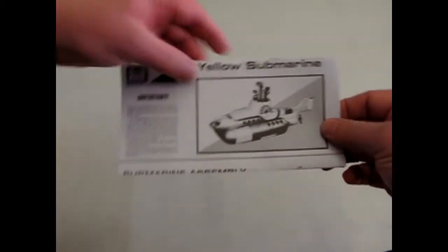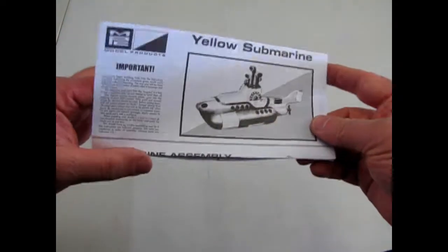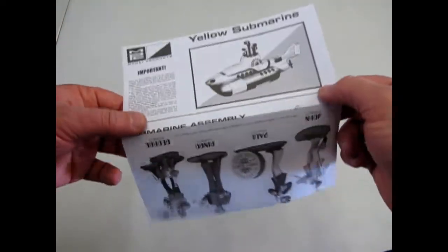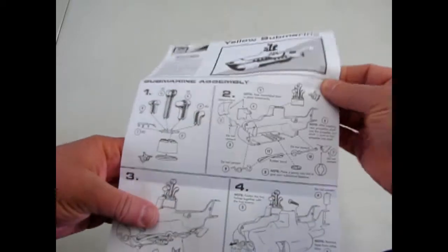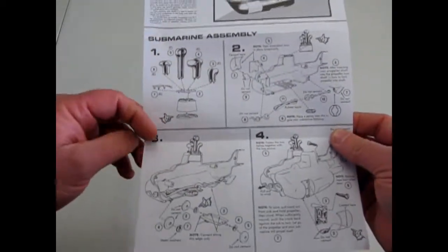Okay, and there's our Yellow Submarine instructions. Now this kit originally came out back in the 60s when the Beatles were still very popular, and it's come in and out of production ever since.